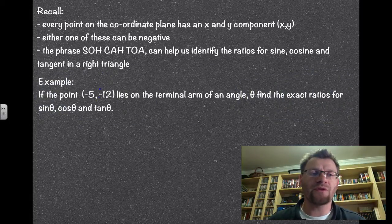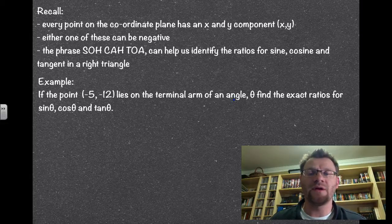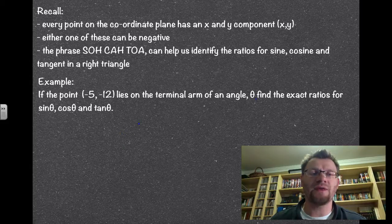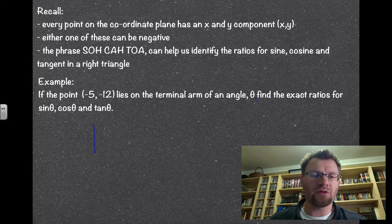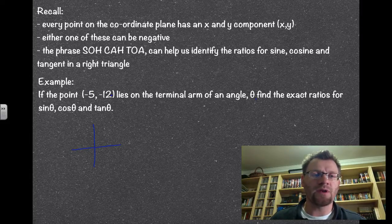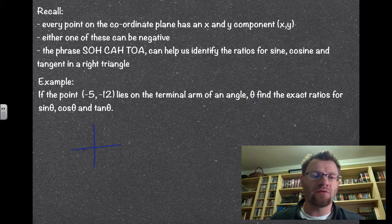We're going to start off with an example. If the point (-5, -12) lies on the terminal arm at an angle theta, find the exact ratios for sine theta, cos theta, and tan theta. You're always going to want to draw a little diagram first. I'm going to draw the point negative 5 and negative 12. Remember that x is negative on the left, and y is negative going down, so we're at (-5, -12), this point right here.